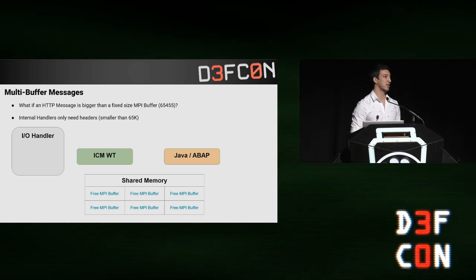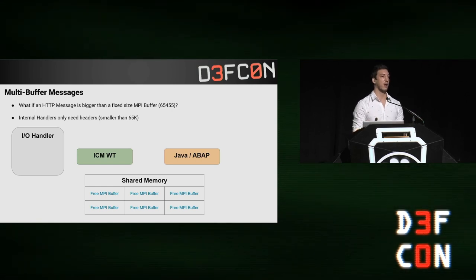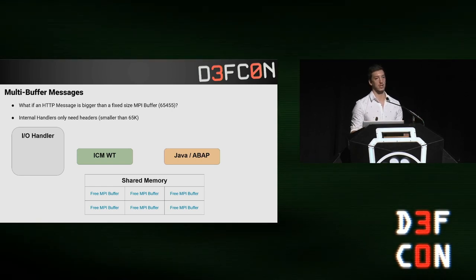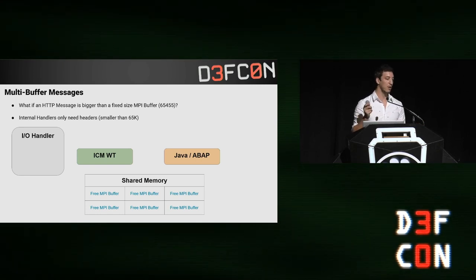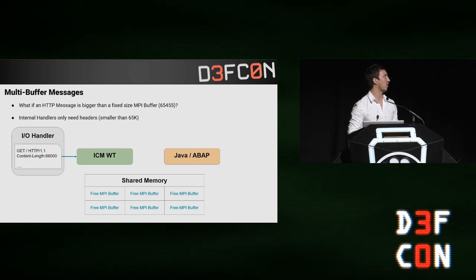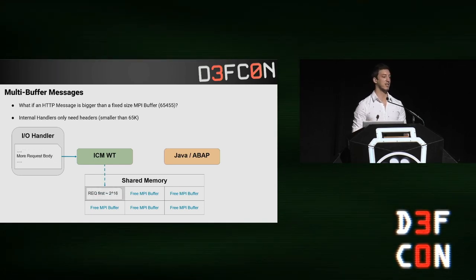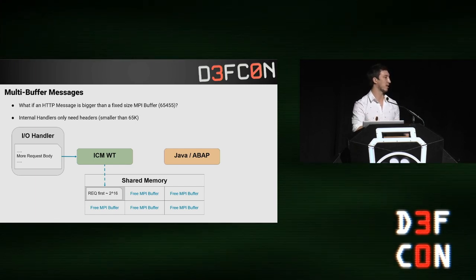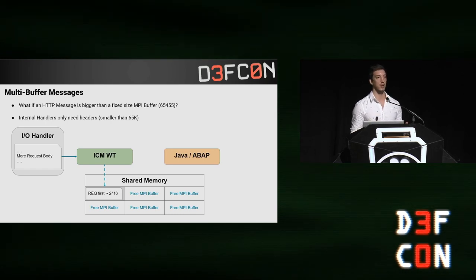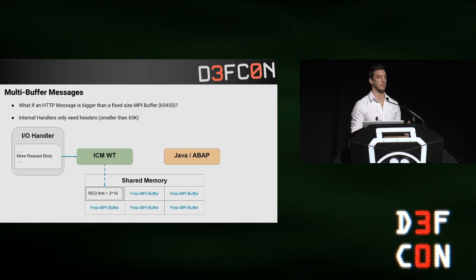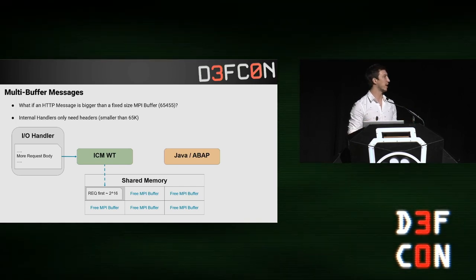MPI buffers are fixed size, meaning they can only hold 65 kilobytes of data. What if we send a longer request — something that cannot fit inside an MPI buffer? If we send a request with a content-length of 66,000 bytes, the ICM first reserves an MPI buffer and only places the first 65 kilobytes. This is because internal handlers are supposed to resolve requests that don't contain a body — just simple requests with some special headers. The ICM is not expecting to use the rest of the body until the worker process is required.